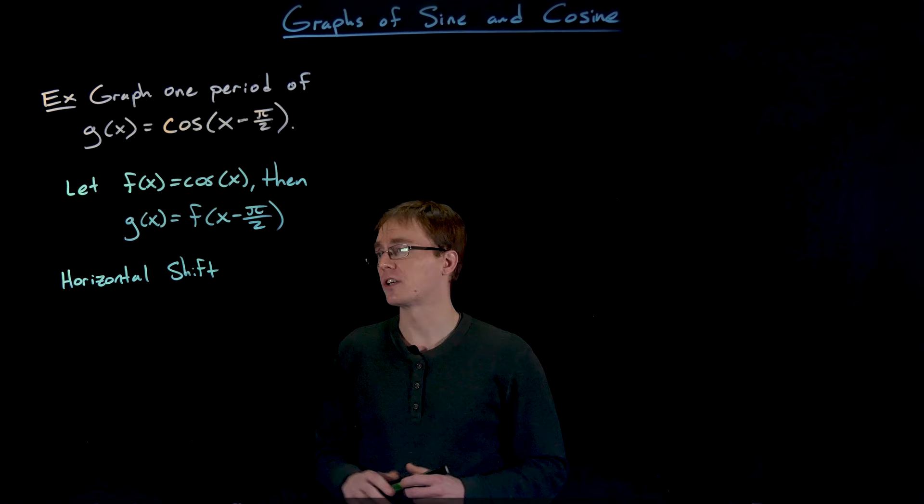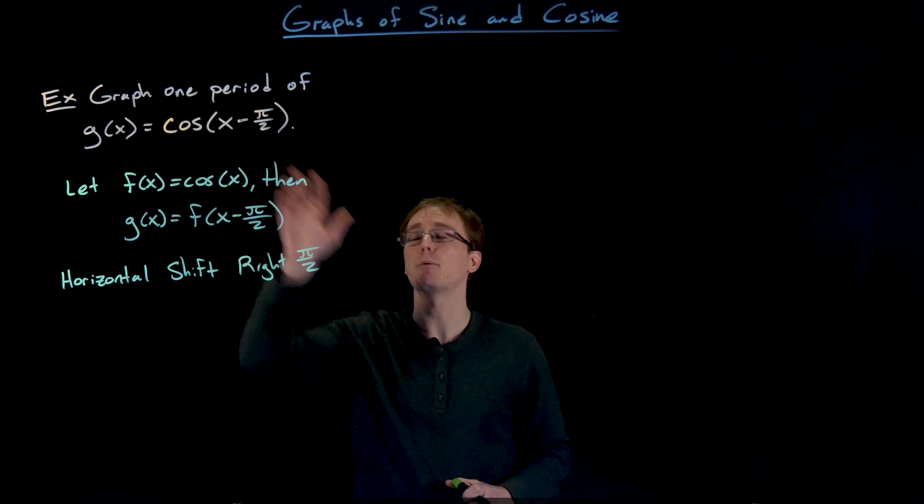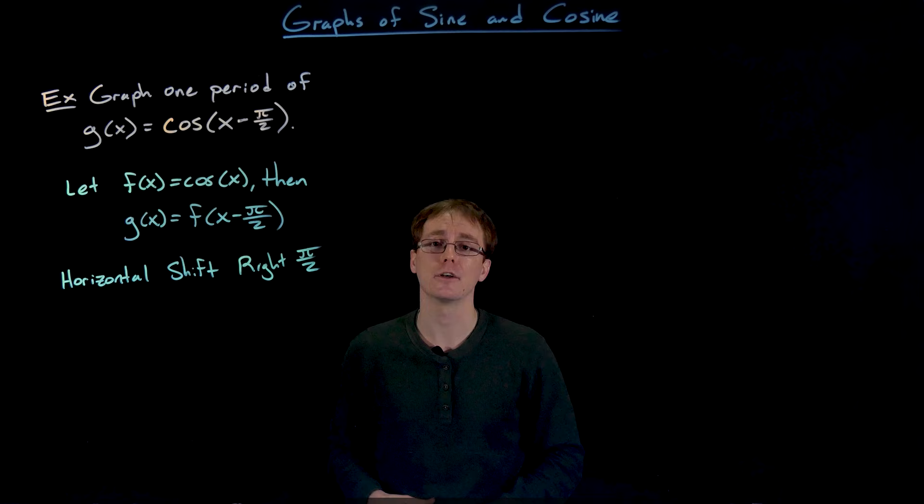This is a horizontal shift to the right π over 2 units, and the way we're going to perform this horizontal shift is we're going to take those key points on the graph of our original cosine function and add π over 2 to the x value of those key points.